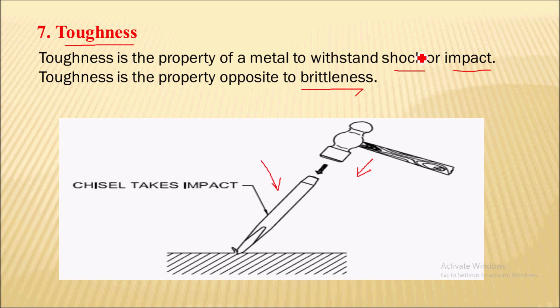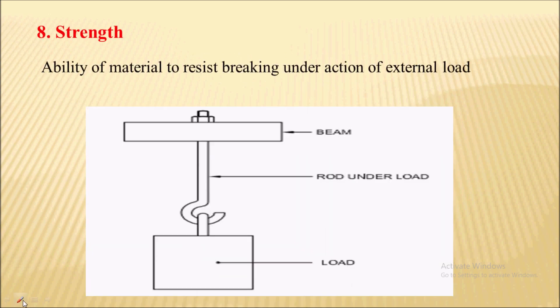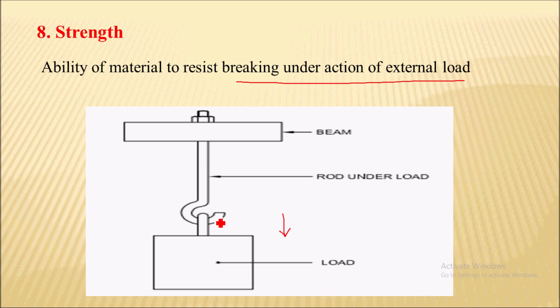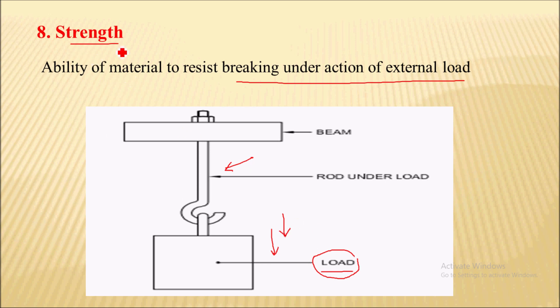Next is strength. Strength is the ability to resist breaking under the action of an external load. Here you can see a rod which is applied with an external load due to which it gets deformed. The ability of this material to resist the external load is nothing but the strength. This strength will depend on the type of loading — whether it is tensile, compressive, or shear loading.